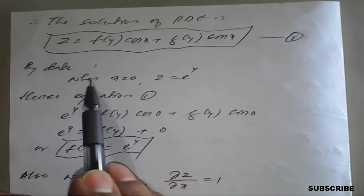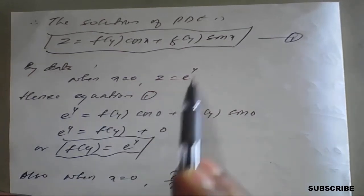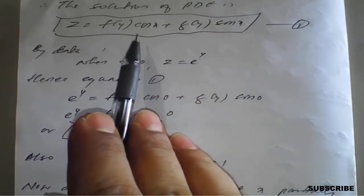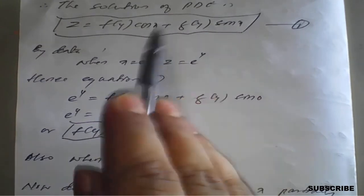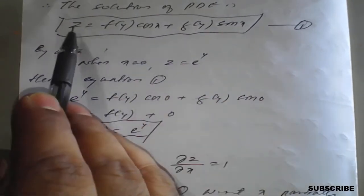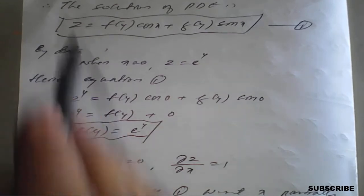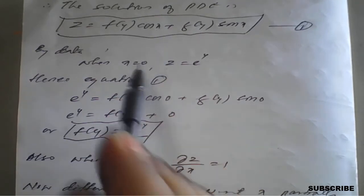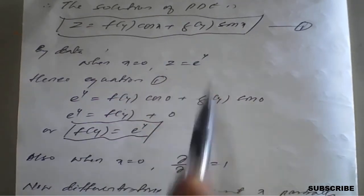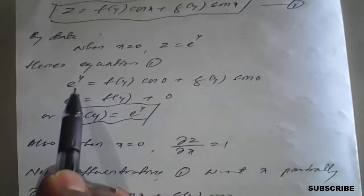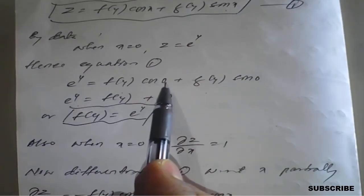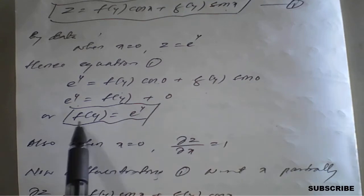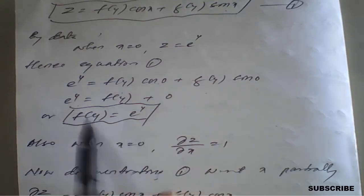Now apply the first condition: when x = 0, z = eʸ. Substituting into equation one: eʸ = f(y)cos(0) + g(y)sin(0). Since cos(0) = 1 and sin(0) = 0, this simplifies to eʸ = f(y). So we have found that f(y) = eʸ.